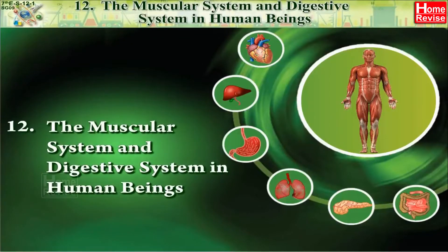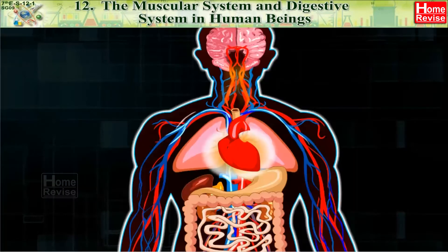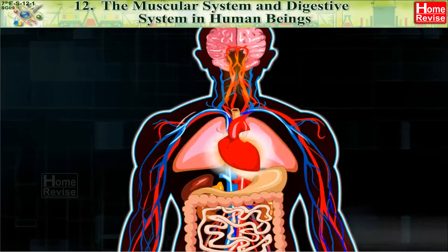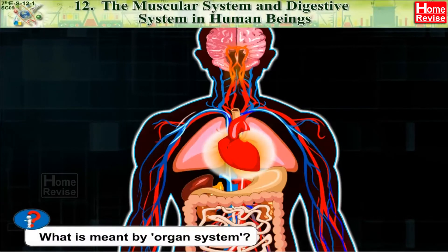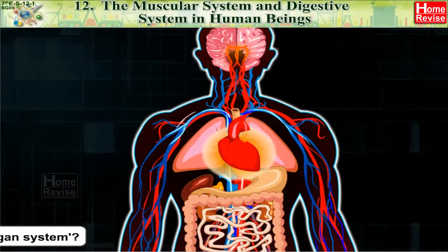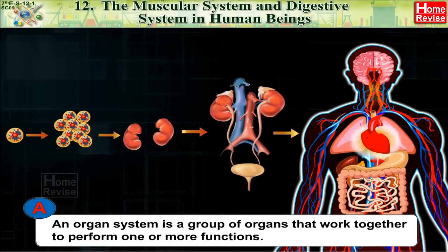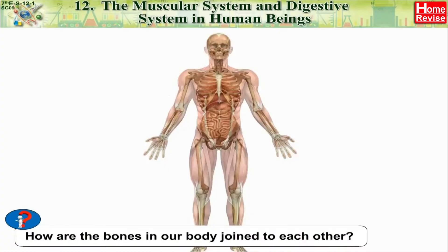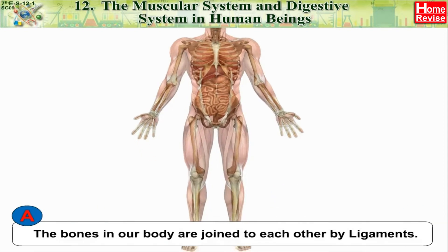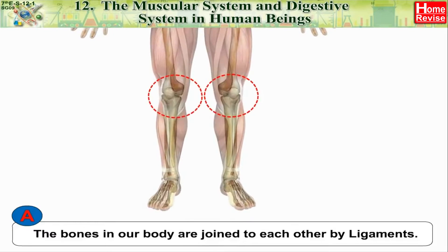Chapter 12: The Muscular System and Digestive System in Human Beings. Let's recall a few things. What is meant by organ system? An organ system is a group of organs that work together to perform one or more functions. How are the bones in our body joined to each other? The bones in our body are joined to each other by ligaments.